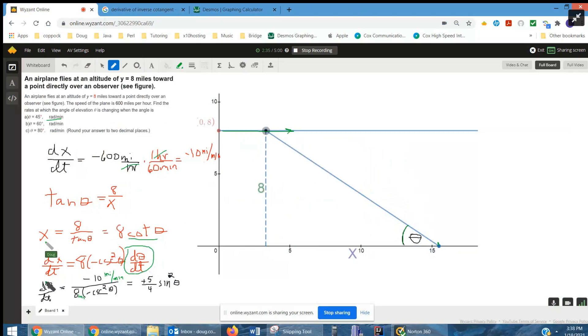And while I'm going to add it, I'm going to replace dx dt with this minus 10 miles per minute. And then divide that value by negative 8 cosecant squared theta. Well, there's the negative over negative is positive. And the 10 eighths reduces to 5 fourths.